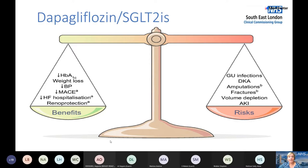Risks of SGLT2 inhibitors include increased risk of urinary tract infections and fungal infections due to glycosuria. There is also the concerning risk of diabetic ketoacidosis (DKA), which should be discussed thoroughly with patients including signs and symptoms to watch for. There have been some signals of increased foot amputation and fracture risk, though not prominently with dapagliflozin. AKI risk should be monitored, and dapagliflozin is not licensed for heart failure if renal function is below GFR 30.